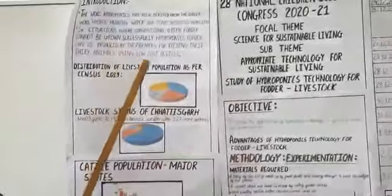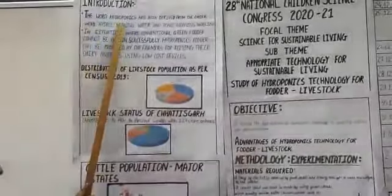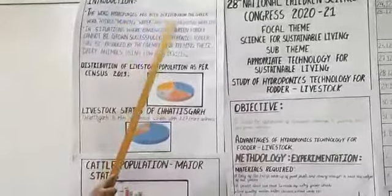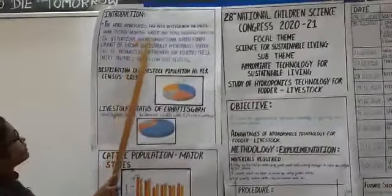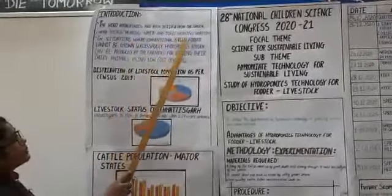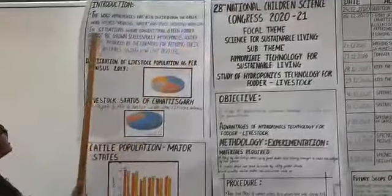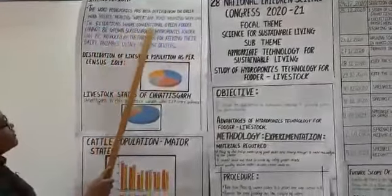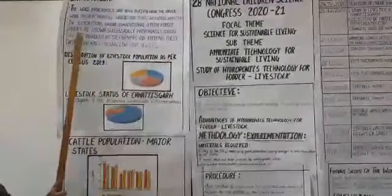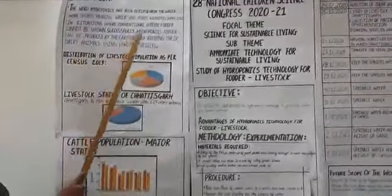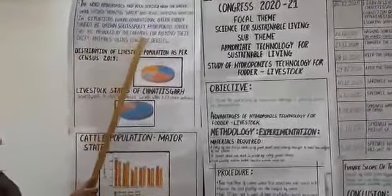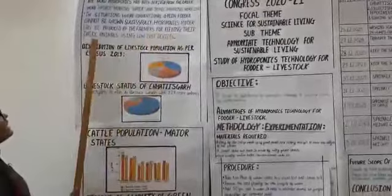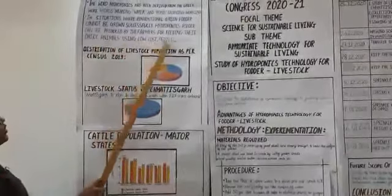First, what is hydroponics? The word hydroponics has been derived from the Greek word hydros meaning water and ponics meaning work. In a situation where the conventional green fodder cannot be grown successfully, hydroponic fodder can be produced by the farmers for feeding their dairy animals using low cost devices.